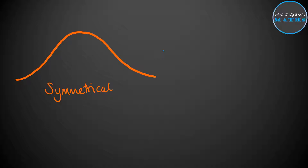When you have a symmetrical distribution, it doesn't really matter which one you pick because both the mean and the median will sit nicely in the middle of your data. That shape being symmetrical means your mean, median and mode are all right there in the middle.